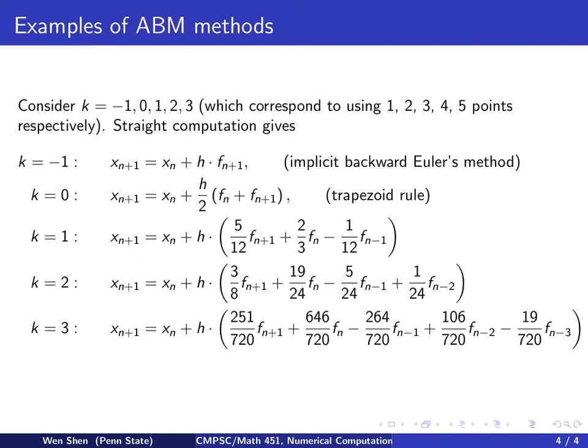Remark again, all these methods are implicit, meaning fn plus 1 appears on the right-hand side. There it contains the unknown xn plus 1. So you will have to combine this with some Newton iteration or secant method, which could take some time.